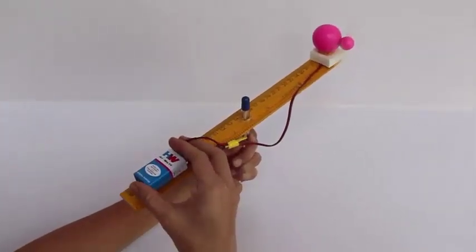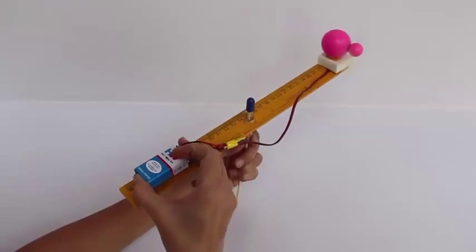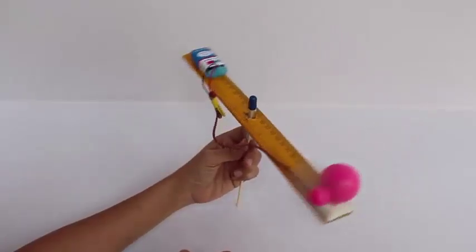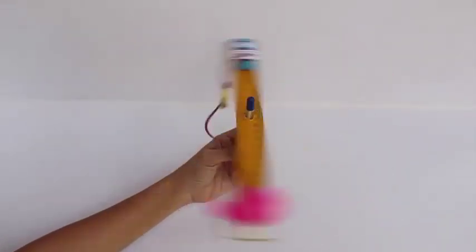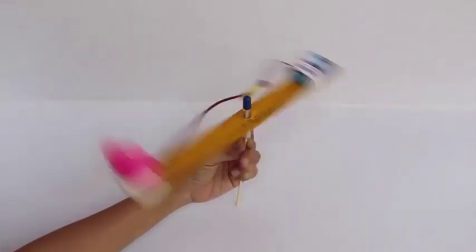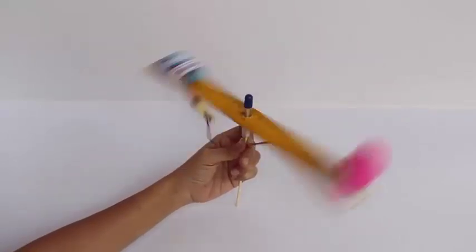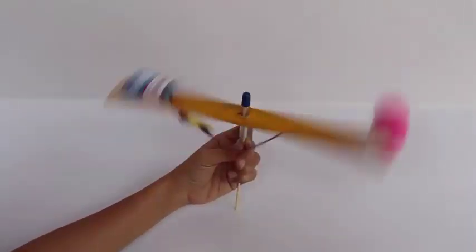Now attach the motor to the battery. The blades of the motor would start to spin. And as per Newton's third law of motion, every action has an equal and opposite reaction, and the whole scale will start spinning fast and very fast.